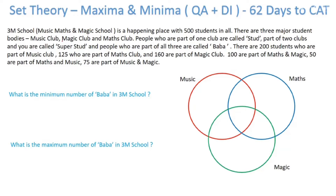There are three major student bodies: Music Club, Magic Club, and Maths Club. People who are part of one club are called studs, people who are part of two clubs are called super studs, and people who are part of all three are called baba. There are 200 students in Music Club, 125 in Maths Club, 160 in Magic Club, 100 in Maths and Magic, 50 in Maths and Music, and 75 in Music and Magic.